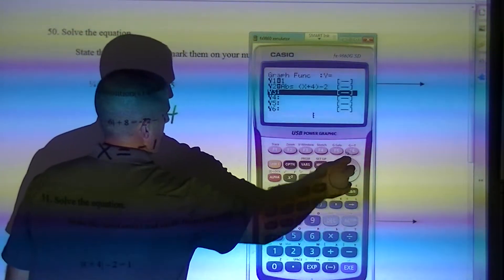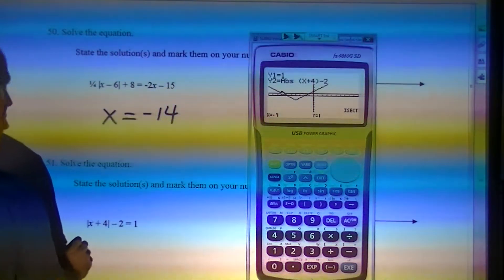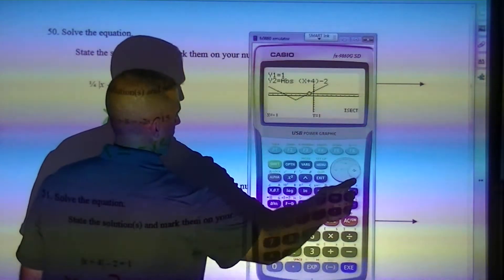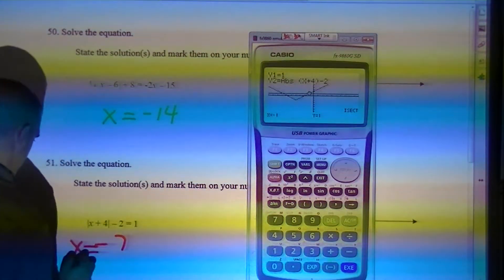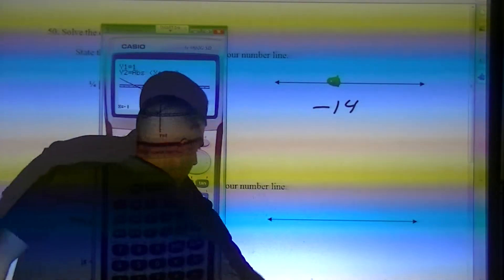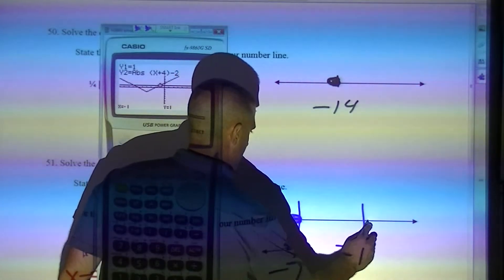I'm going to zoom in a little bit. I'm going to zoom out so much. G solve, intercept. One answer is negative 7. I only care about the x's. And the other answer is negative 1. So now my number line. Negative 7 would be there, boom. Negative 1 would be there, boom.